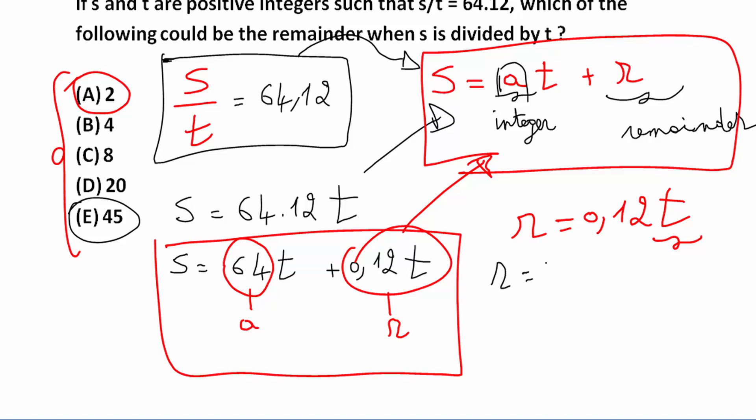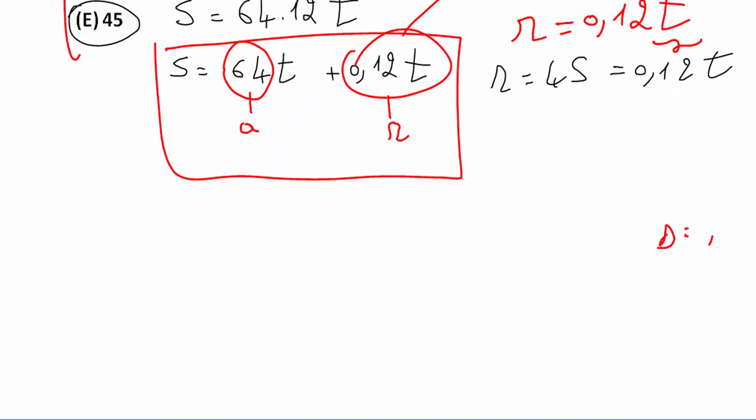So if R equals 45, so 45 is equal to 0.12 T. Let me see if T is an integer. So T is equal to 45 divided by 0.12. So I will multiply by 100, and here 12.